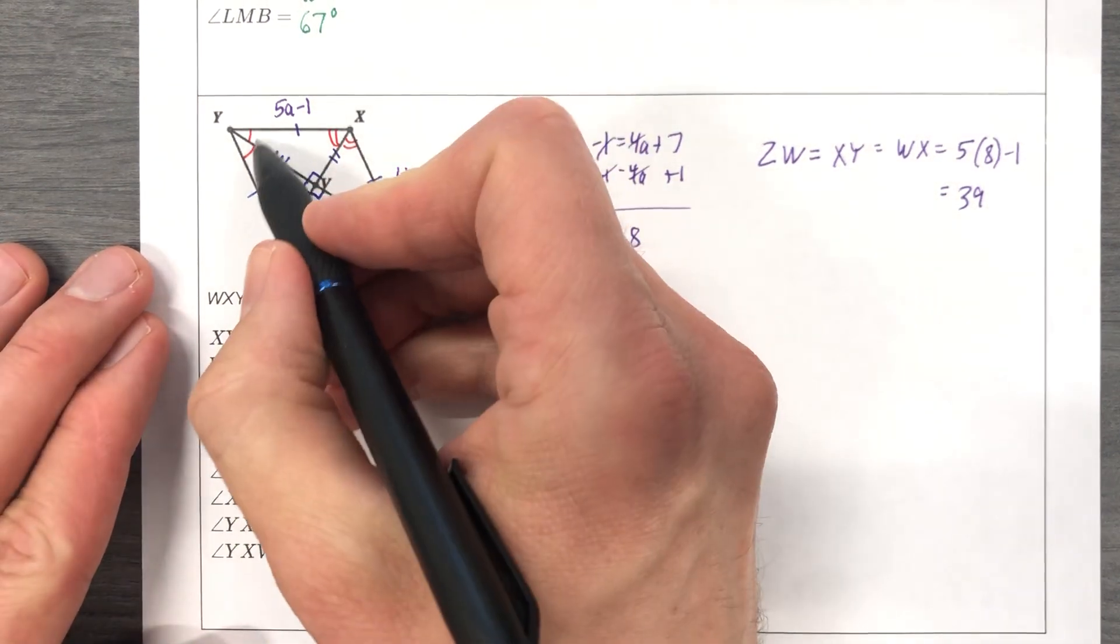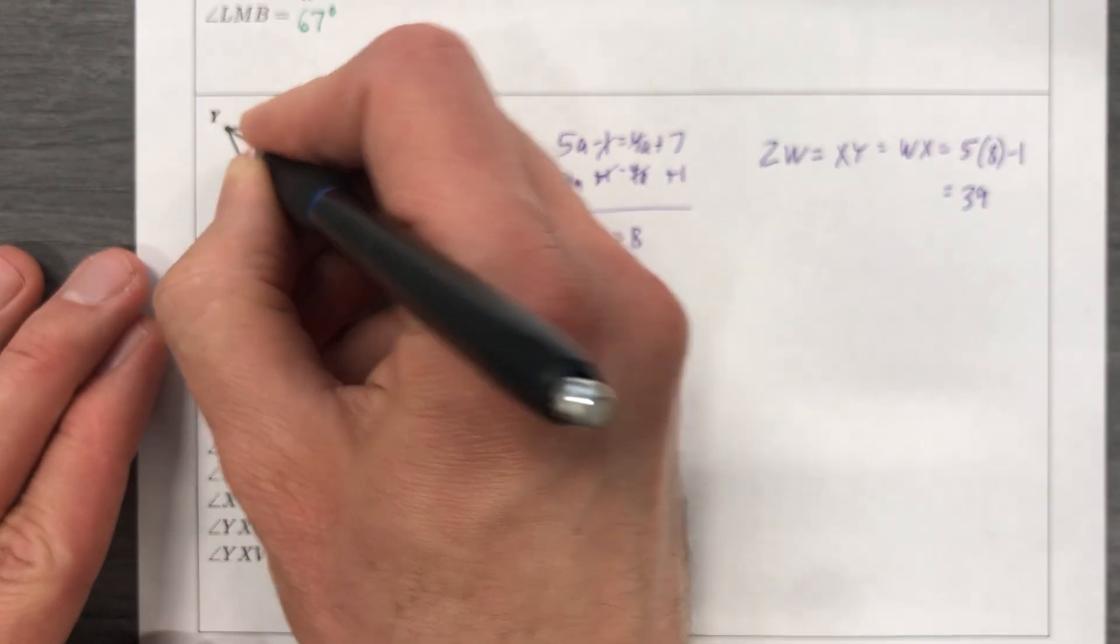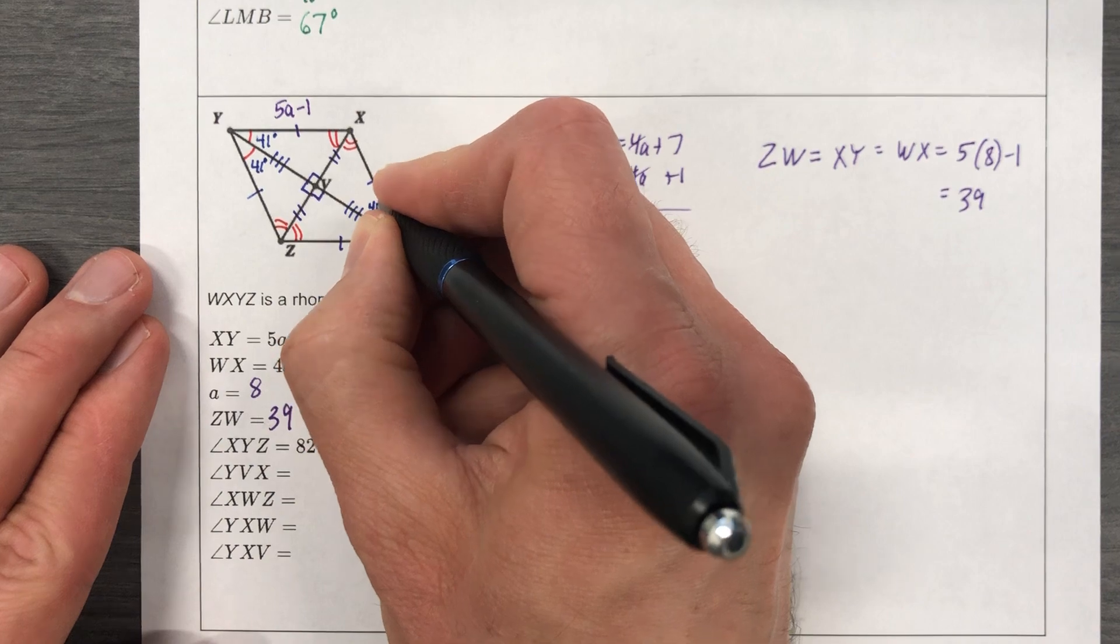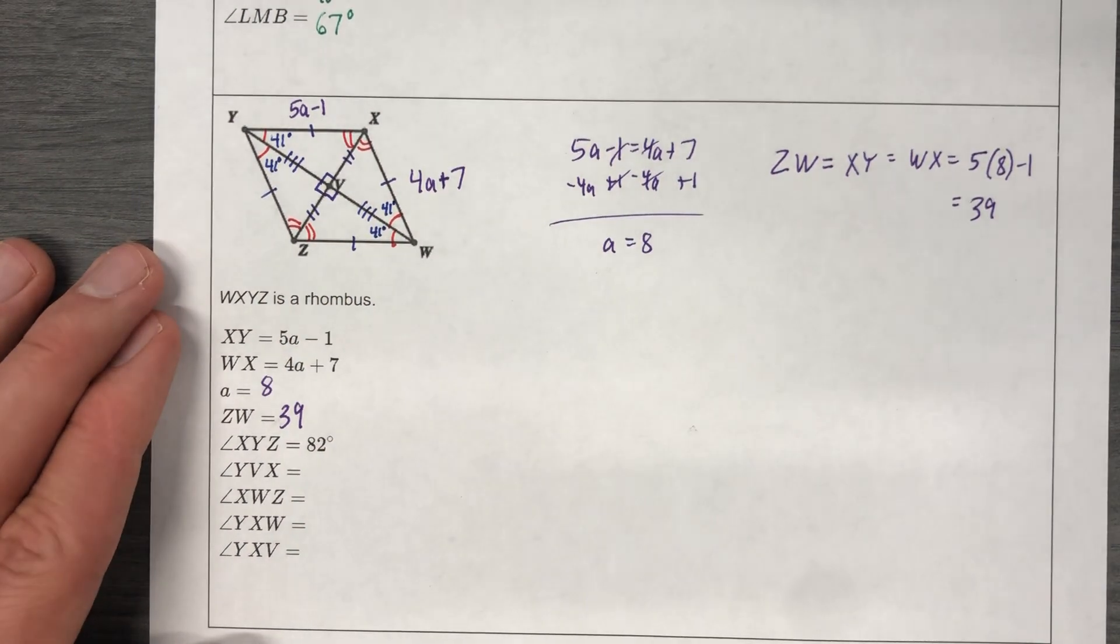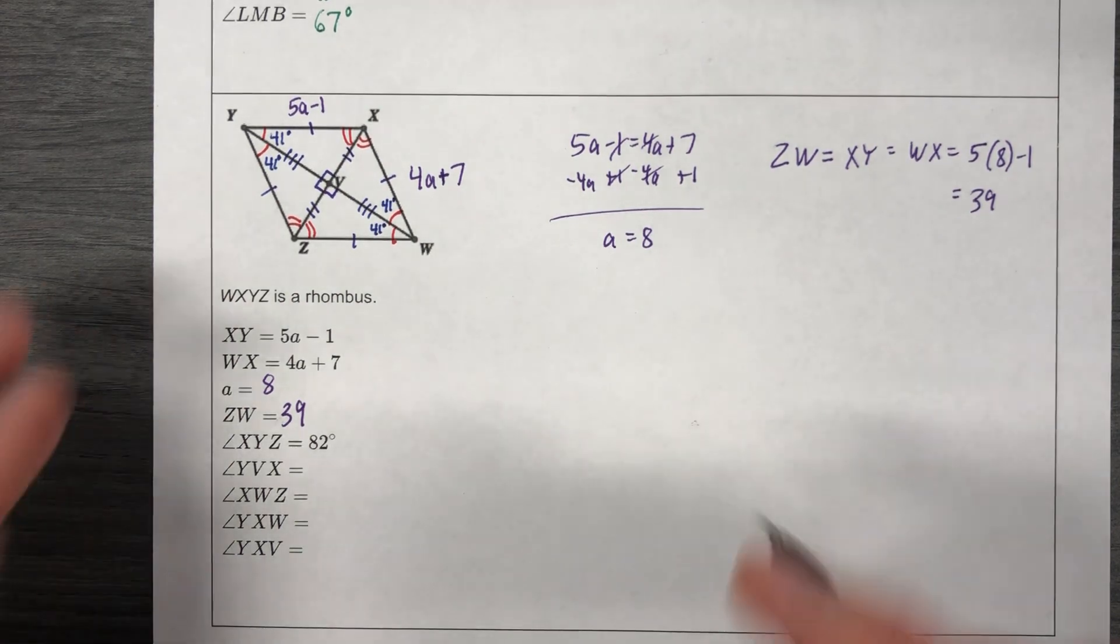82 degrees is up here. Well, I'm going to cut 82 in half, so that makes this 41, which makes this 41, which makes this 41, which makes this 41, and the picture's getting a little cluttered, and before I even answer what they've asked me, I'm going to just jump in with some other things that are fairly obvious.